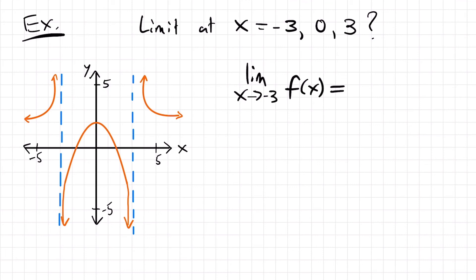From the left side, as we get closer and closer to x equals negative 3, we are reaching higher and higher values of y — greater and greater numbers — so that one is going to positive infinity. Since the right side is heading towards negative infinity but the left side is going to positive infinity, they don't agree, and so we have to say that the limit from both sides does not exist.